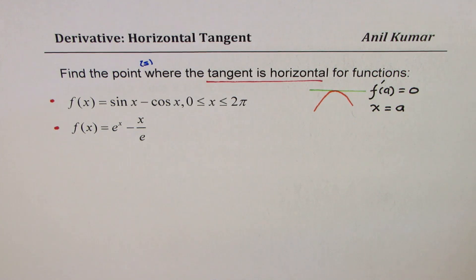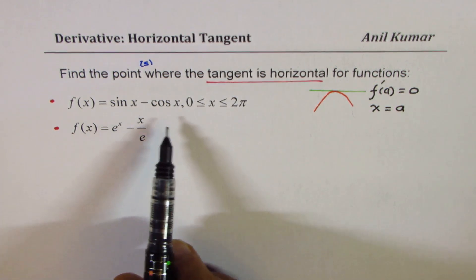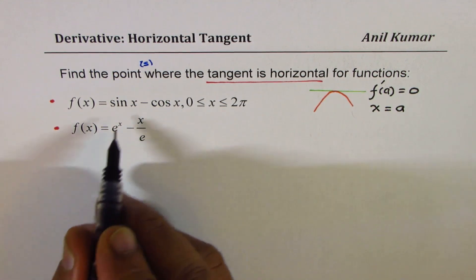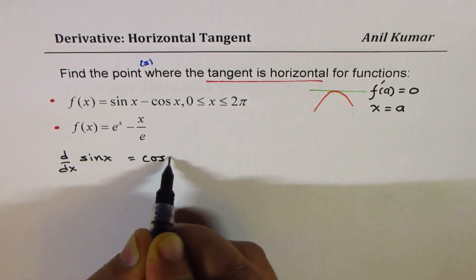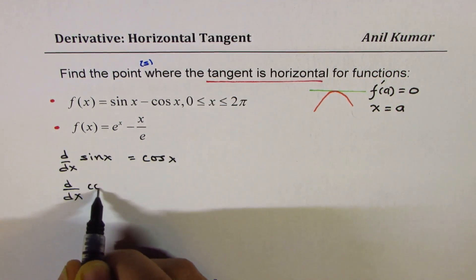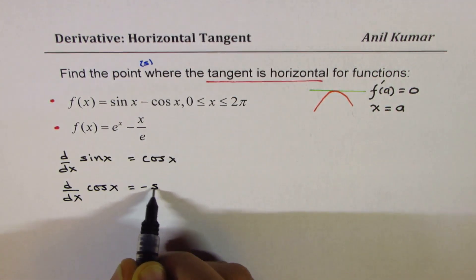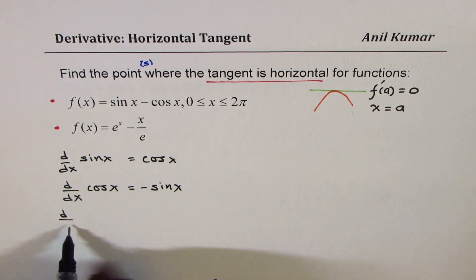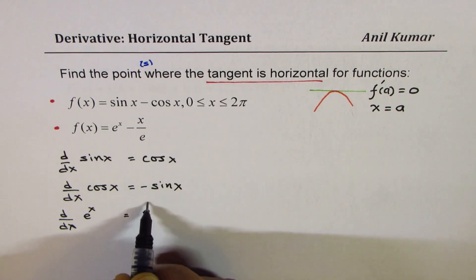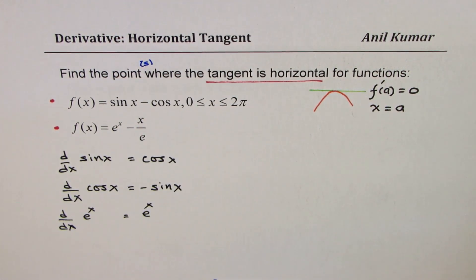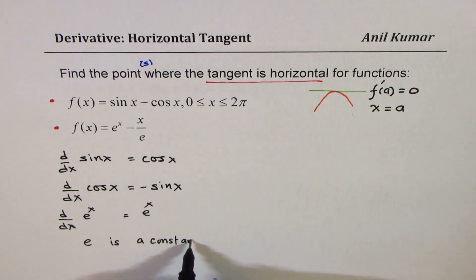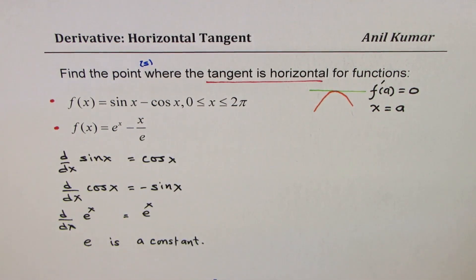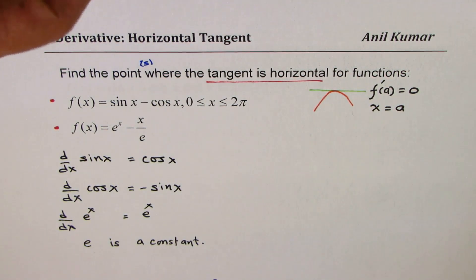Let me remind you of the derivatives of the terms we have here. The derivative of sin x is cos x. The derivative of cos x is −sin x. And the derivative of e^x is e^x. That's what we need. Remember, e is a constant. With this, you should be in a position to answer this question — so pause the video, answer the question, and then look at my suggestions.